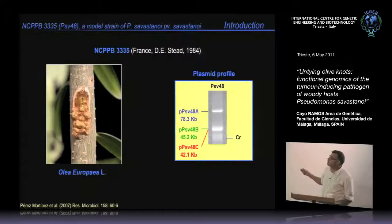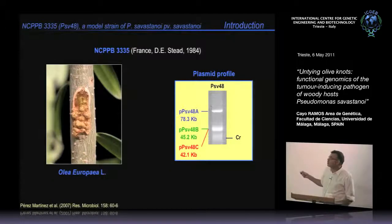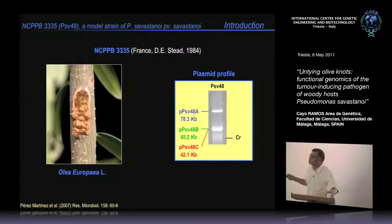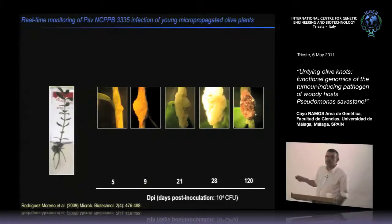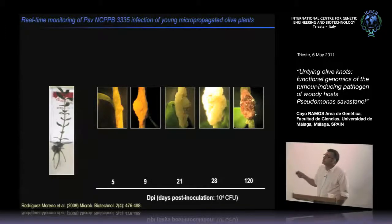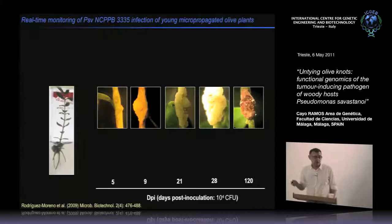Originally we thought this strain contained only two plasmids, but we have finished sequencing all three. On a gel, the two plasmids of very similar size cannot be differentiated. As a model system, we developed the growth of in vitro grown olive plants, which is simpler to work with in the laboratory. The strain produces on in vitro olive plants the same symptoms seen in naturally grown olive plants.